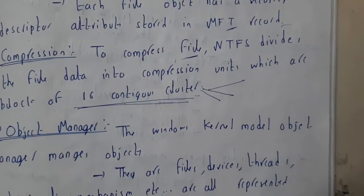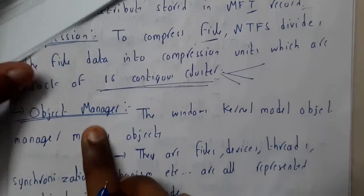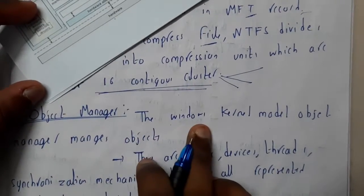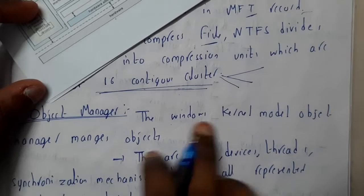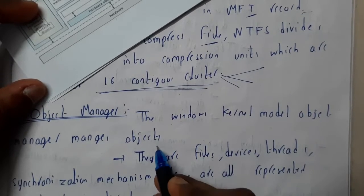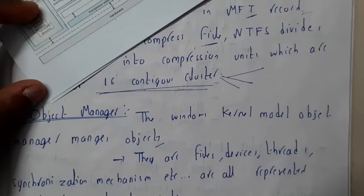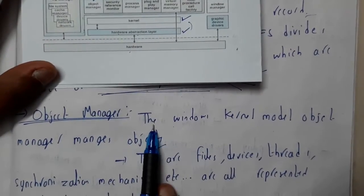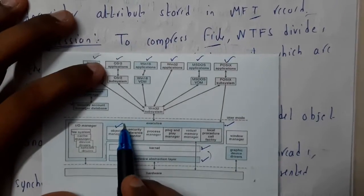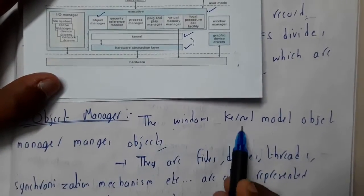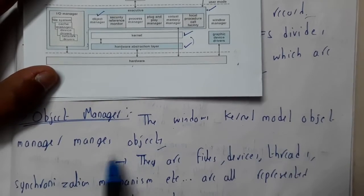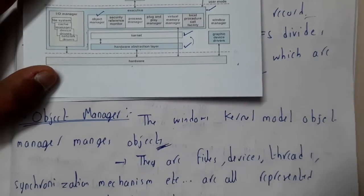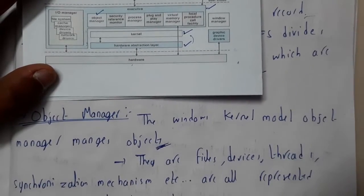First, let us start with Object Manager. The Windows kernel model object manager manages the objects. From the name we can say it manages objects. Your question will be: what are the objects?